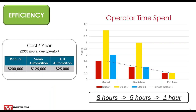To put that into dollars and cents, using a fully burdened labor rate of $100 per hour with 2,000 working hours per year: operating a manual system costs $200,000 in labor, a semi-automated system costs $125,000 in labor, and a fully automated system costs just $25,000 per year in labor.